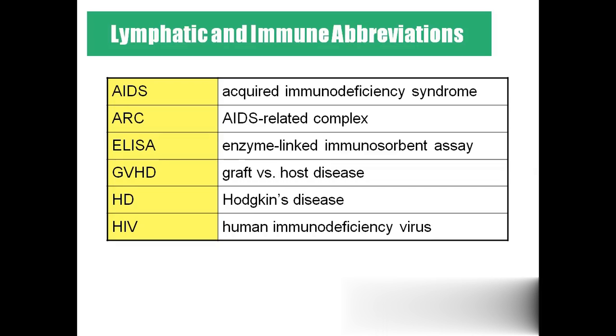ELISA — enzyme-linked immunosorbent assay, which is the test for AIDS. GVHD — graft versus host disease. HD — Hodgkin's disease.